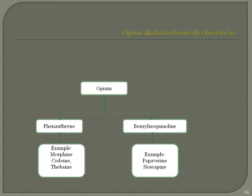Chemically, opium alkaloids are of two types based on their ring structure. Those containing a phenanthrene ring include morphine, codeine, and thebaine. Those containing benzyl isoquinoline include papaverine and noscapine.